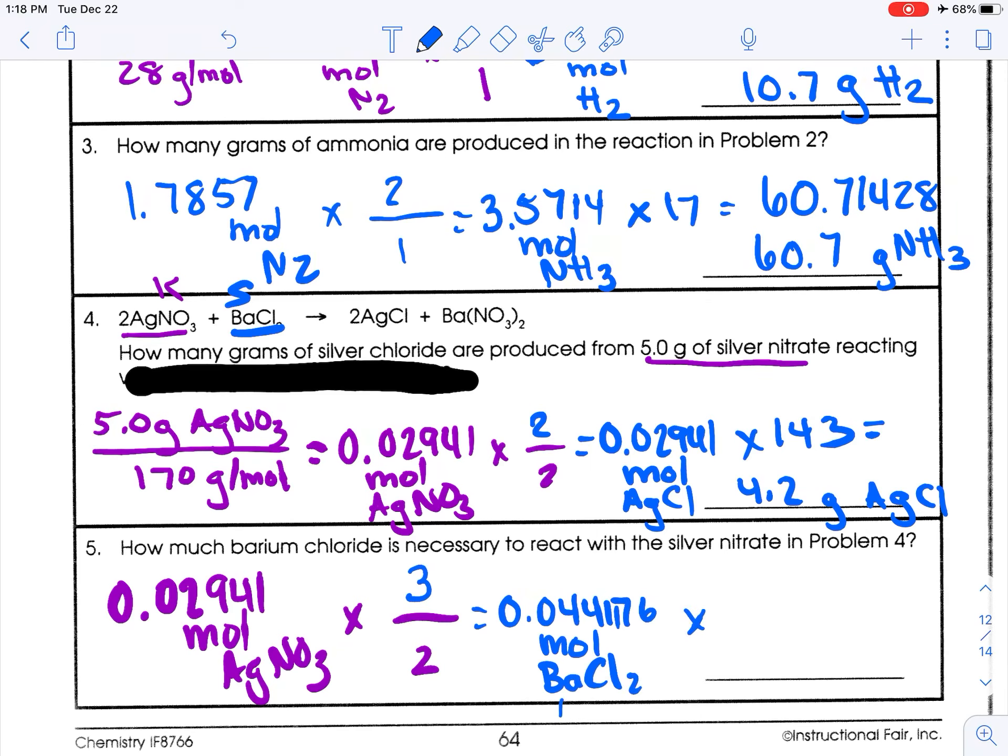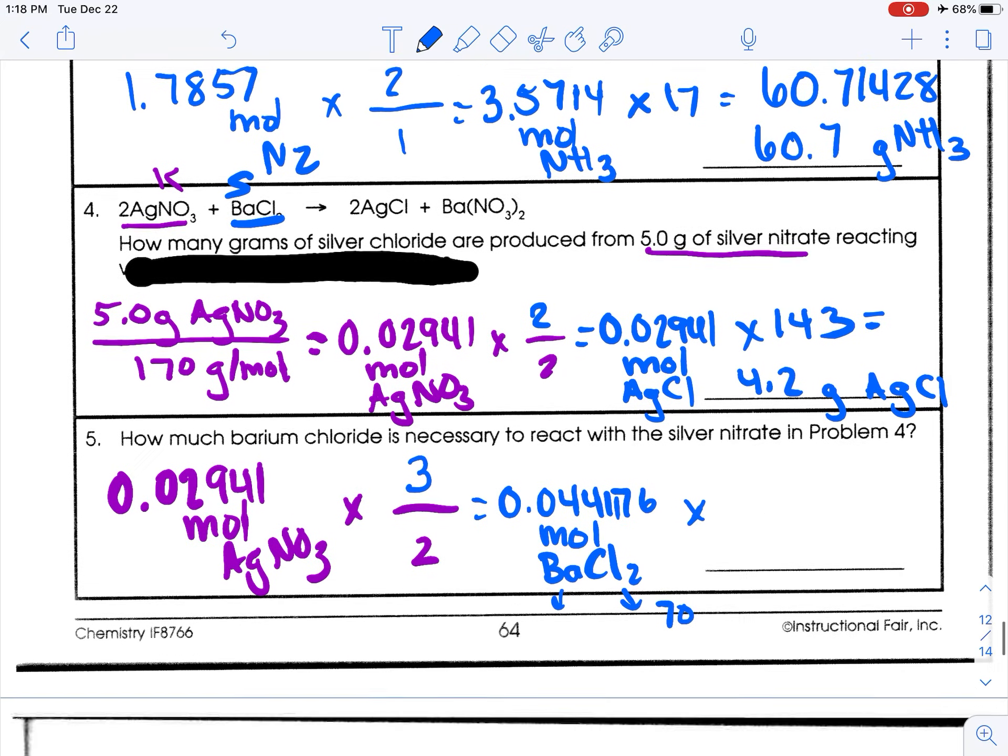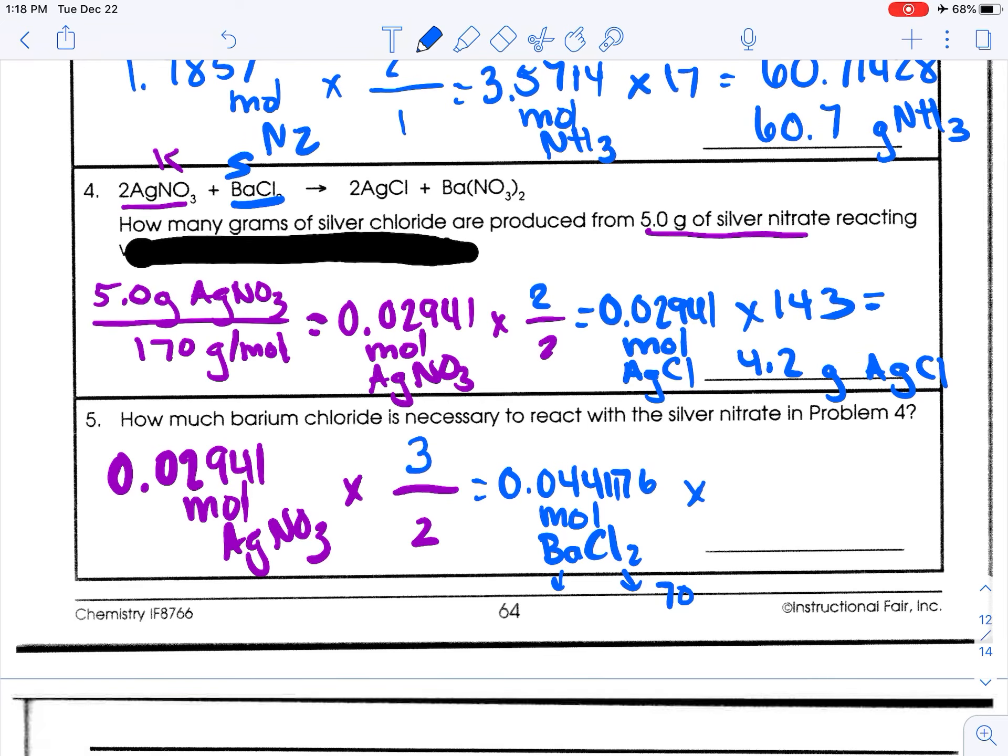Now we're going to need to multiply it by the GFM of this. So this is 35 times 2. So that's 70. And then barium is 137. So 137 plus 70 is 207 grams per mole. So let me go back. For the sake of all this, I'm doing that. Times 3 divided by 2. Now multiply by 207. So you get 9.13235. So let's just say 9.1 grams of barium chloride.